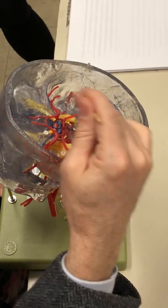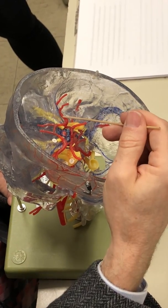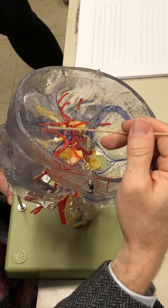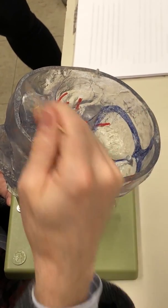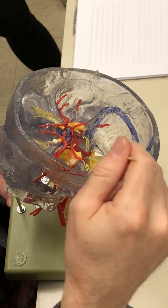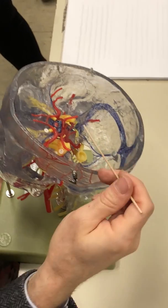It's going to distribute blood to the cerebrum: posterior cerebral, middle cerebral arteries, supplying blood to the cerebrum. There's also blood going to the cerebellum.